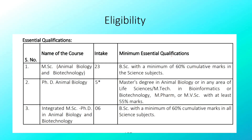Eligibility conditions for MSc Animal Biology and Animal Biotechnology: you need a BSc in any Life Sciences subject with 60% marks to be eligible and join. For Integrated MSc-PhD, the same eligibility applies — BSc with any life science subject.